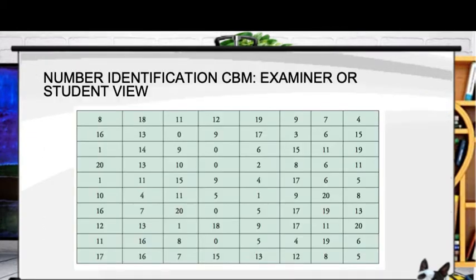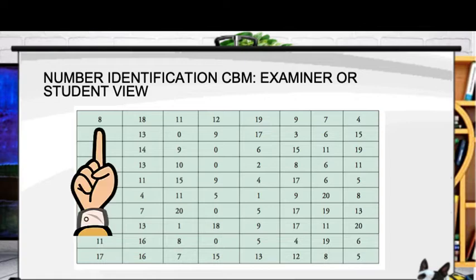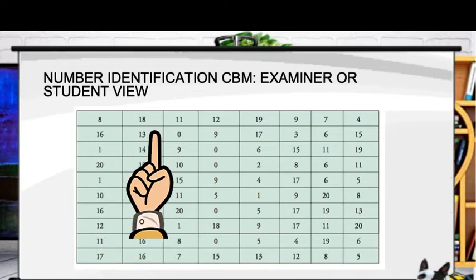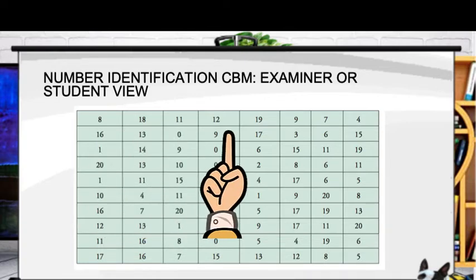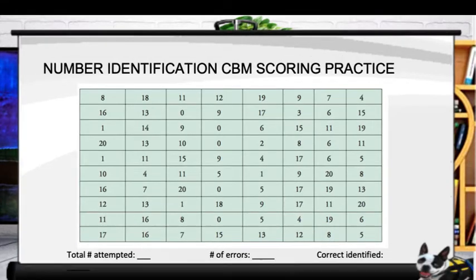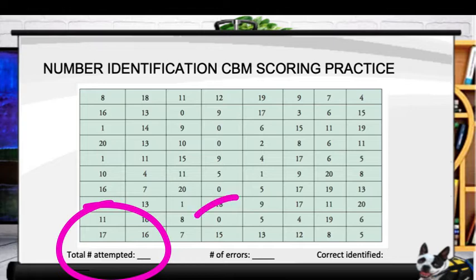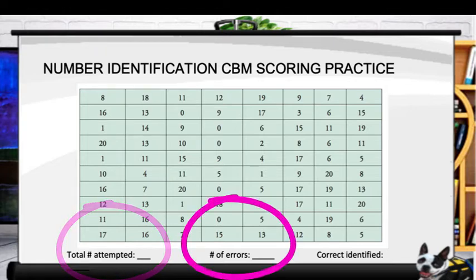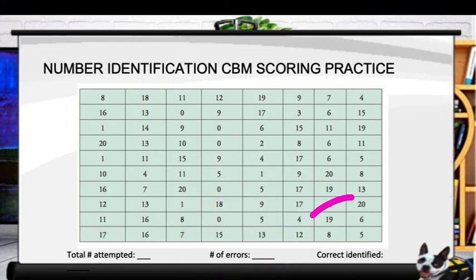The examiner sheet looks very similar. The numbers are randomized, and you simply point at the top and go across the page, letting the student identify those numbers. After time is up, count the total number attempted, count up the number of errors, subtract to get the number of correctly identified numbers.